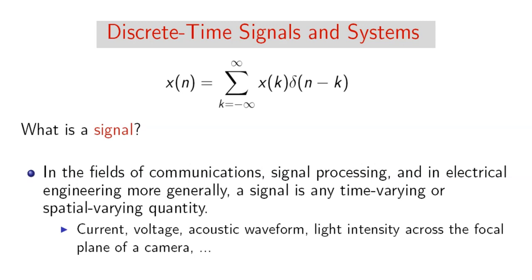What is a signal? In the fields of communications, signal processing, and electrical engineering more generally, a signal is any time-varying or spatial-varying quantity. So it can be current, voltage, acoustic performance, or light intensity across the focal plane of a camera. Any source of information that is changing by time can be represented as an electrical signal or other signals — we can call it a signal.